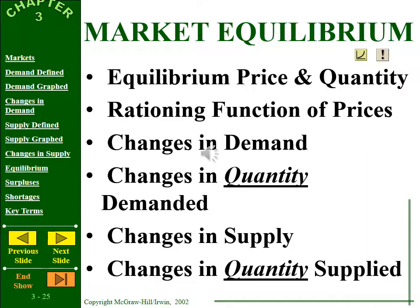Here are some key terms to know: equilibrium price and quantity, rationing function of prices, change in demand versus change in quantity demanded, and change in supply versus change in quantity supplied. In the next chapter, we'll look at how the slope of these curves determines profitability and public policy. This is Mr. Kopitsky signing out — see you next time.